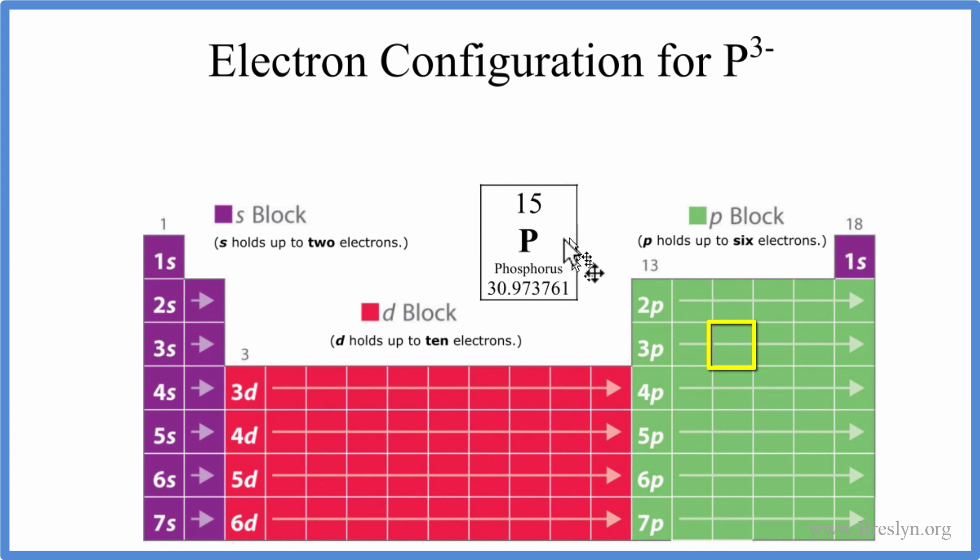In fact, all of the elements on the periodic table are neutral. Because they're neutral, this number here, the atomic number, which equals the number of protons, also equals the number of electrons. So we've got 15 electrons for phosphorus.